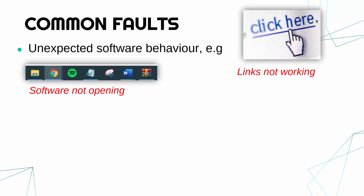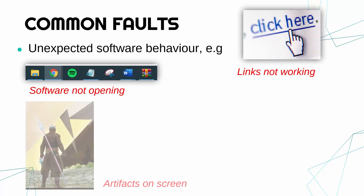Another common fault is things like buttons not working and links not working. You might click it and nothing happens. Again it could be down to the software itself, it could be down to your mouse, or it could be down to the operating system. Another example which can be hardware based but could well be software based are artifacts on screen. An artifact in this case is a very odd, often little shape — for example, this video game has some really weird triangular graphics in the background which aren't meant to be there. Any weird looking visual issue on screen could be caused by the software not working exactly right.